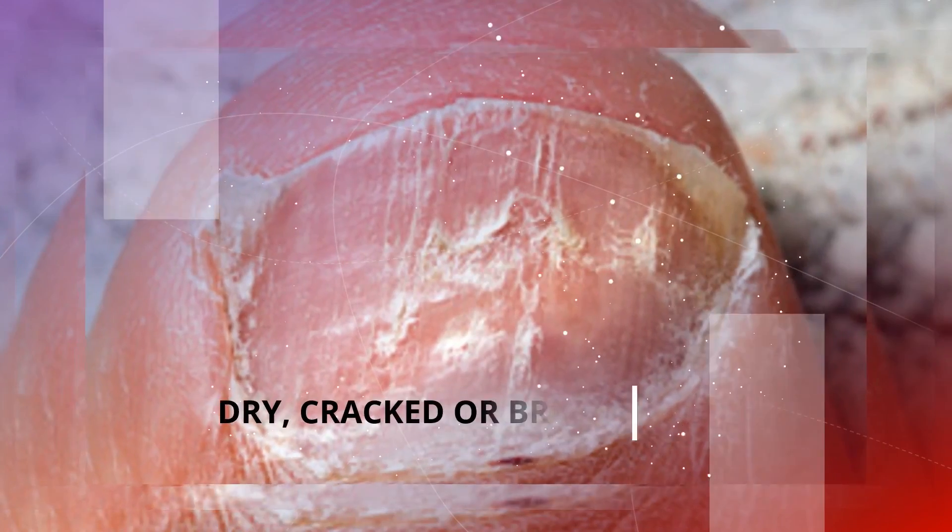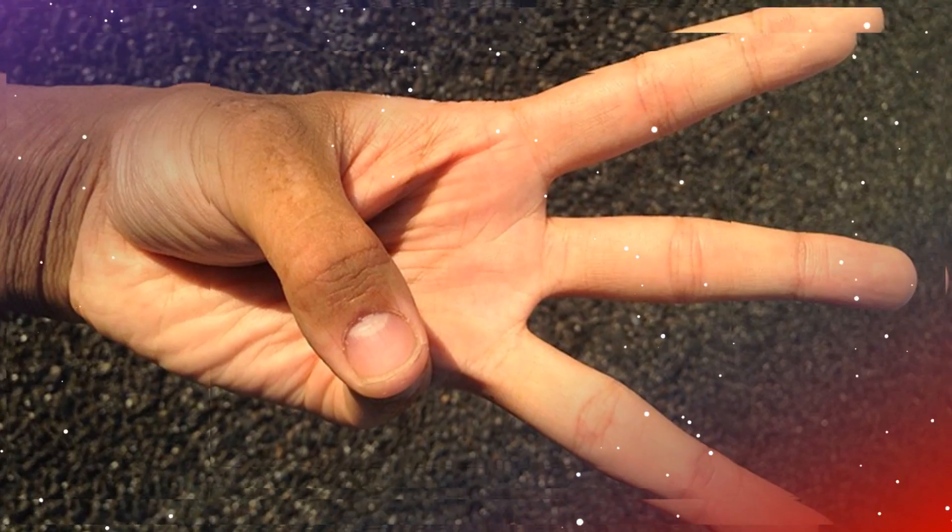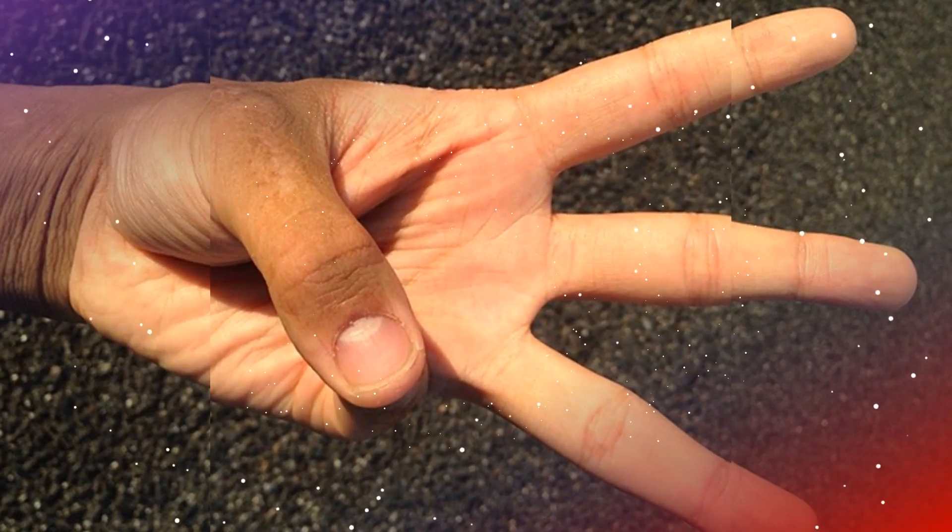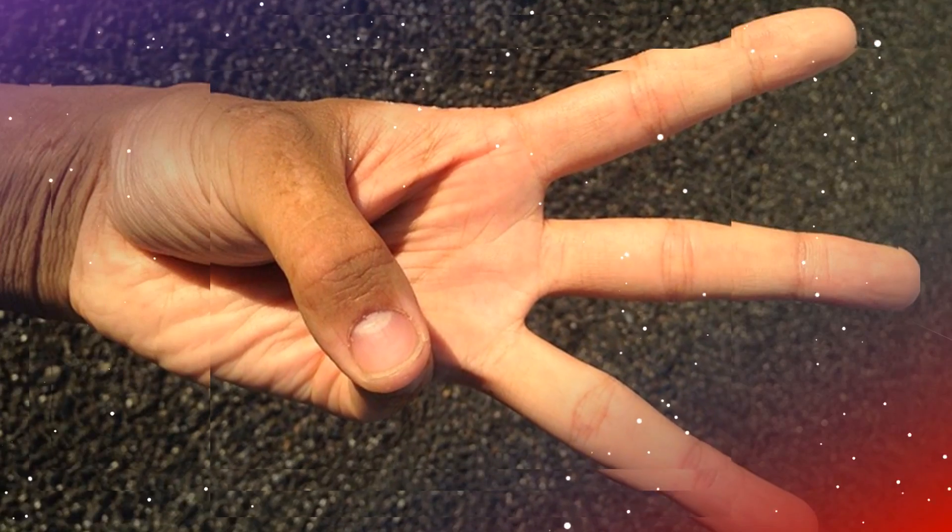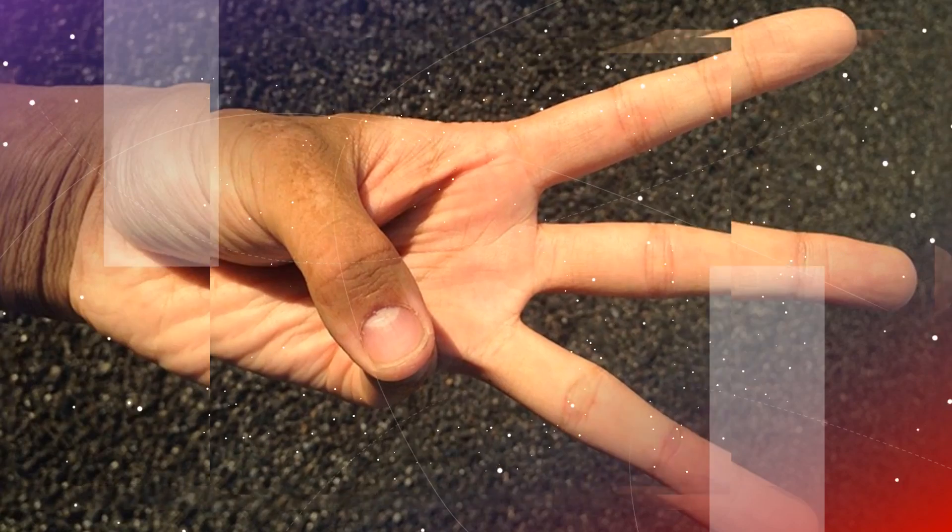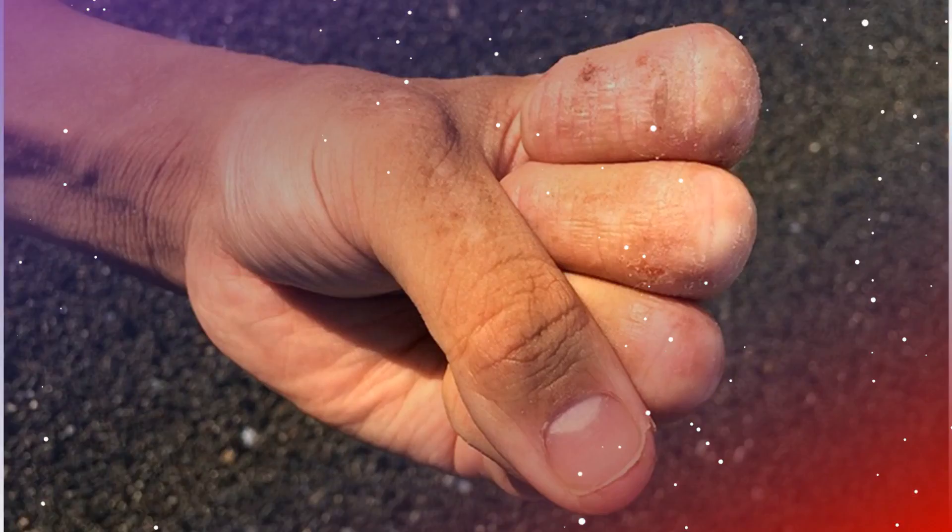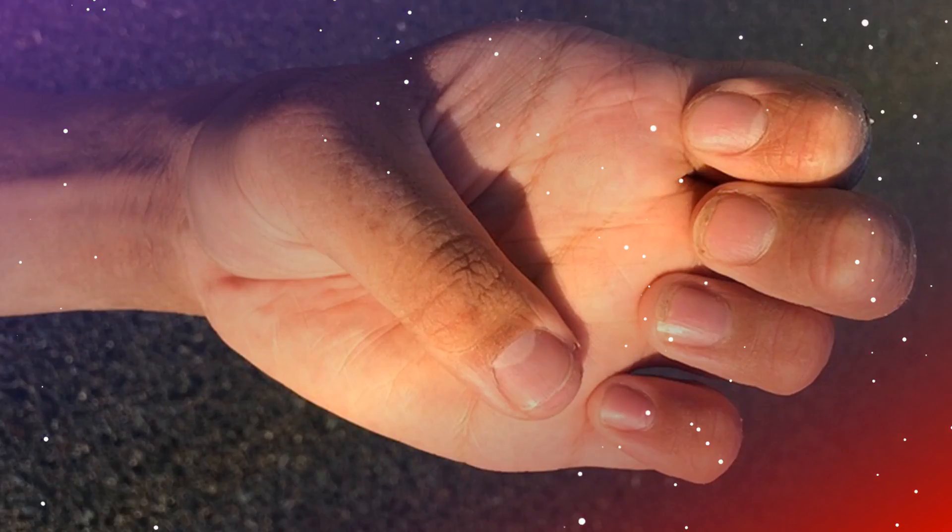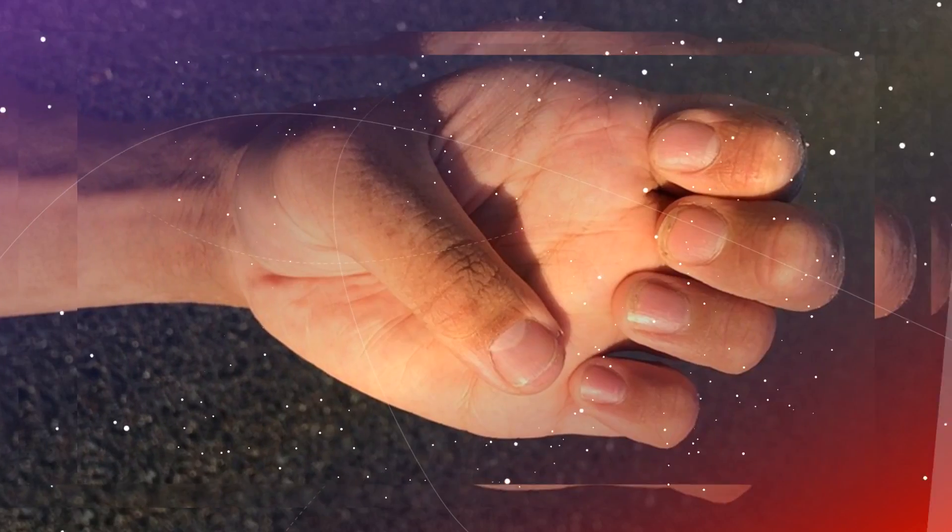3. Dry, cracked or brittle nails. Lifestyle factors may play a role here, such as if you have your hands in water a lot, washing dishes, swimming, etc., use nail polish remover frequently, are exposed to chemicals such as cleaning products often, or live in a region with low humidity. Cracking and splitting can also be caused by a fungal infection or thyroid disease, particularly hypothyroidism. Brittle nails may also be due to a deficiency in vitamins A and C or the B vitamin biotin.